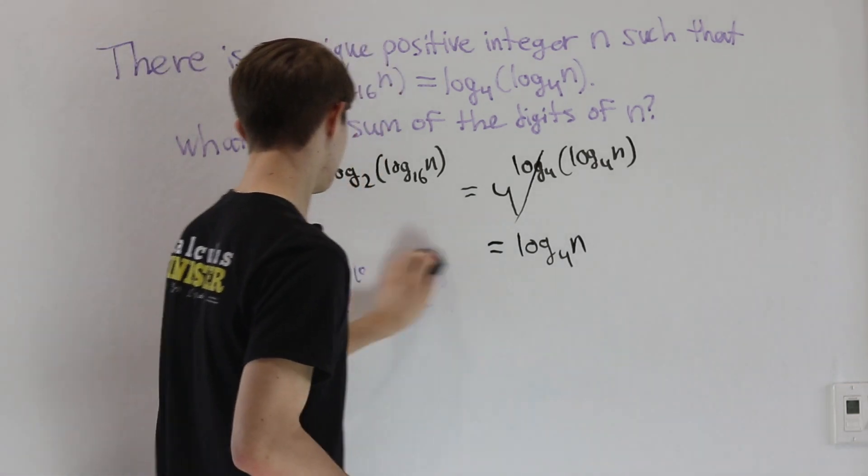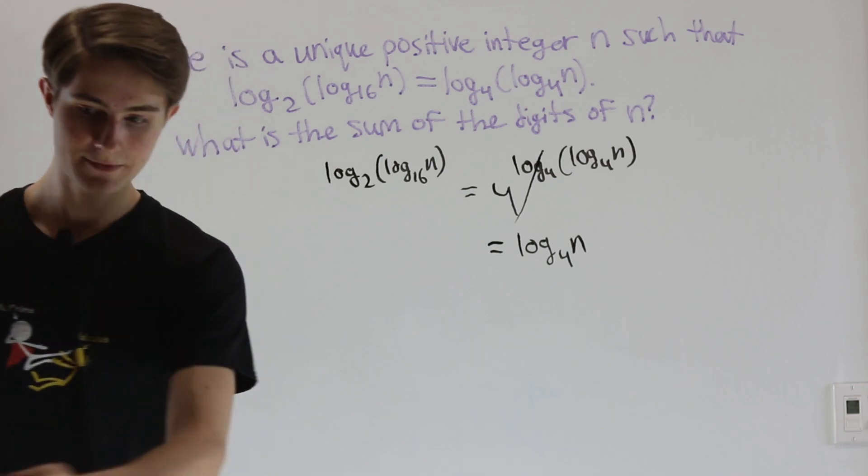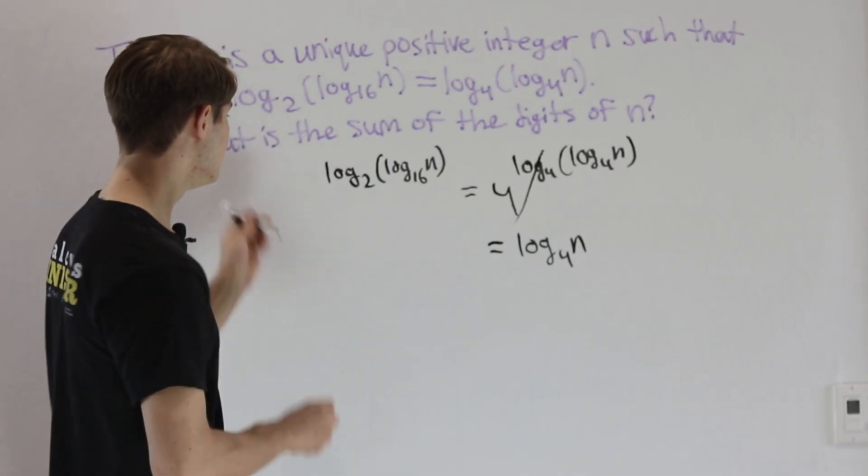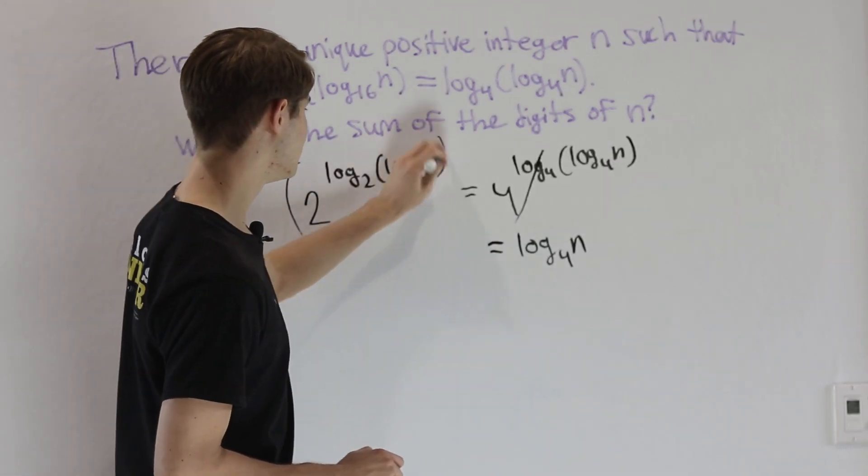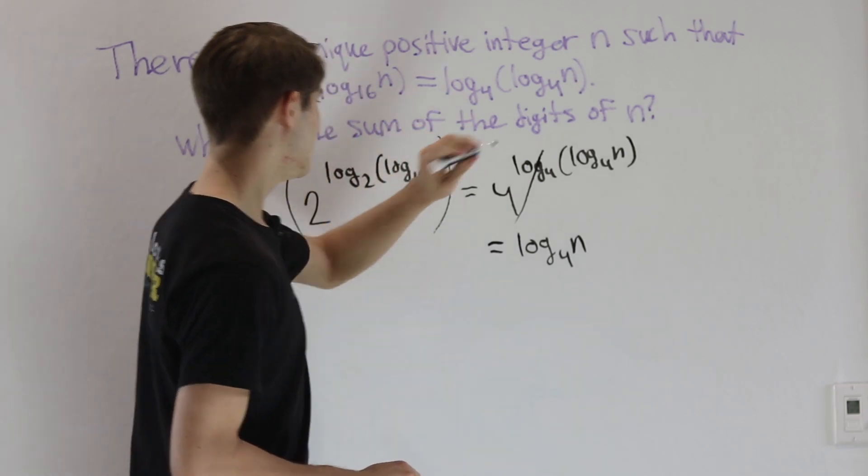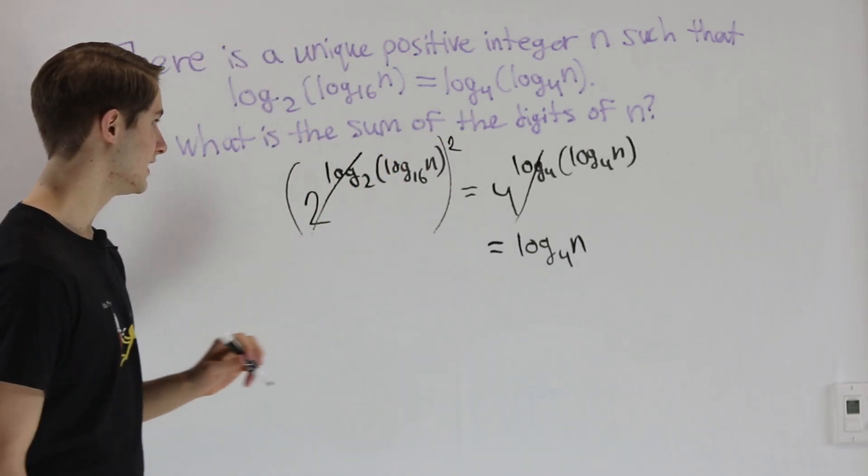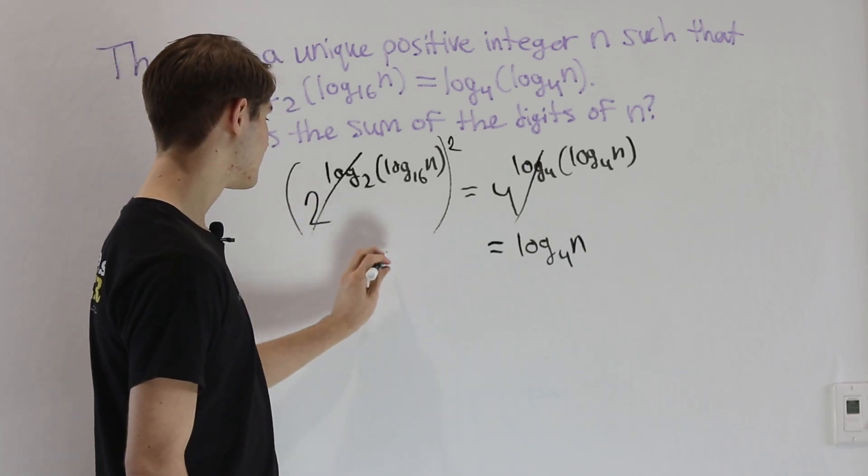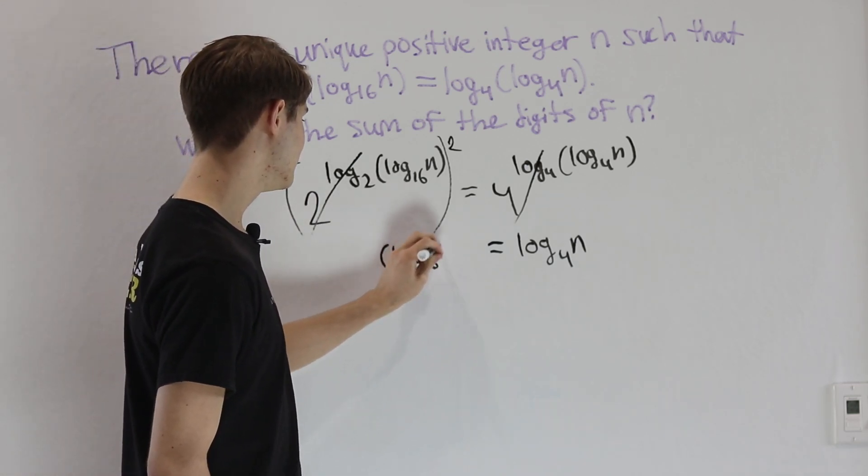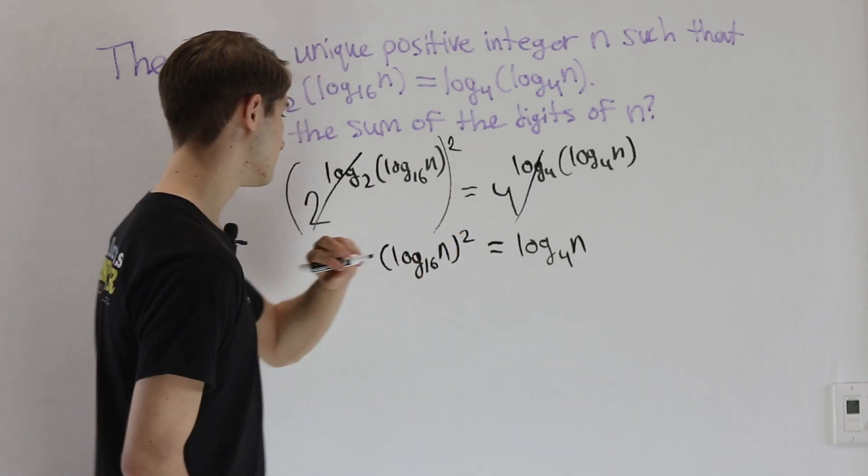On the left side of our equation, we have 2 to the power of log base 2 log base 16 of n and then squared. This 2 and log base 2 are going to cancel out, so on the left side we get log base 16 of n and then squared.